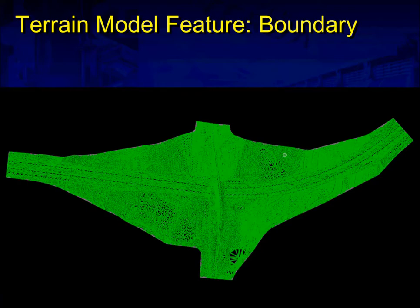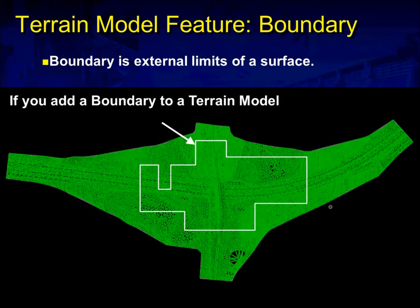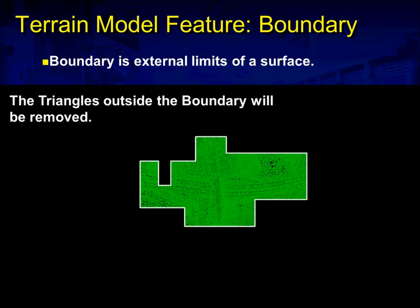Terrain model feature: boundary. We've got an example here of a terrain model. A boundary defines the external limits of the surface. If I add a boundary to the example data — say that white shape — what will happen is the triangles outside the boundary will be removed, because the boundary defines the limits of the terrain model.